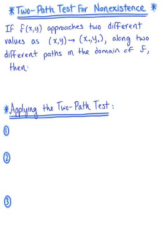So thus far, we have only seen cases where that point P approaches point P-naught from all possible paths. But that's not always going to be the case. So here we're going to establish the two-path test for non-existence of limits. We say that if a function f(x, y) approaches two different values as point P approaches P-naught along two different paths in the domain of f, then the limit doesn't exist.